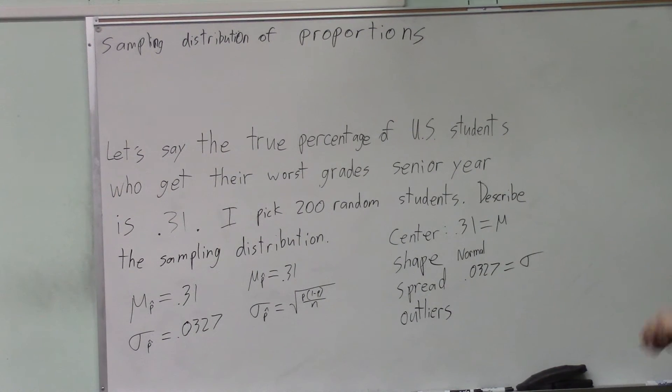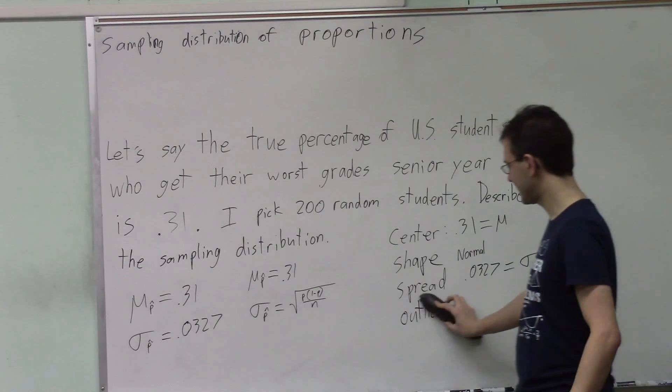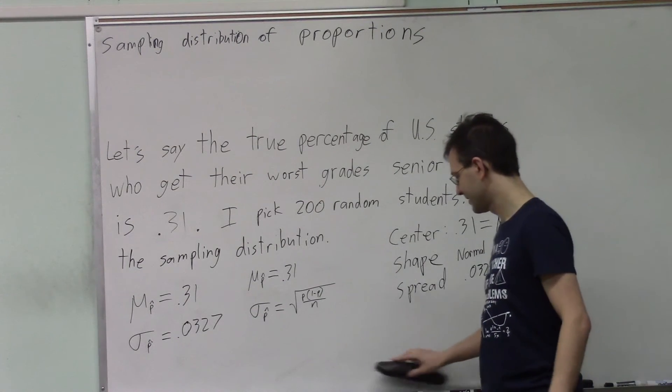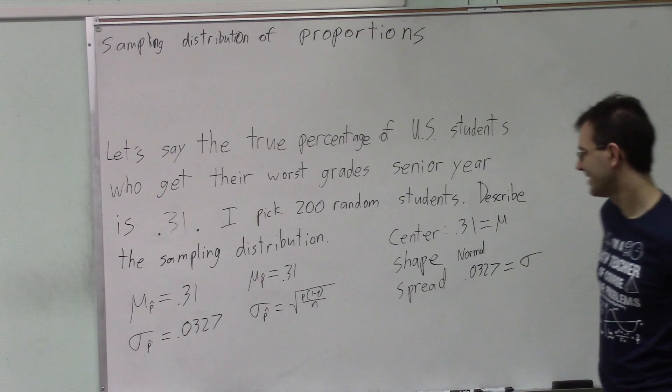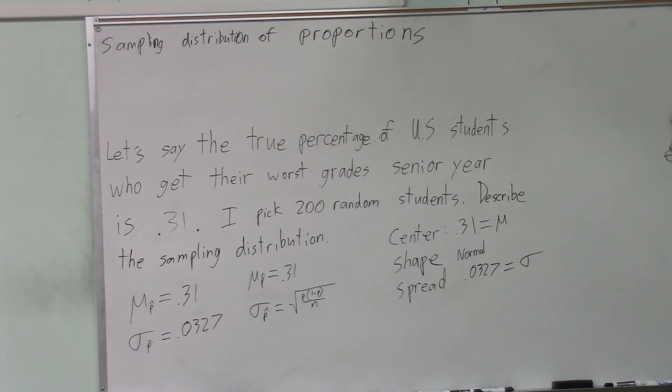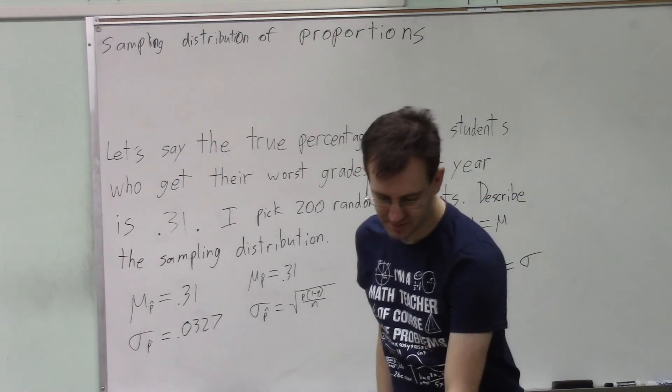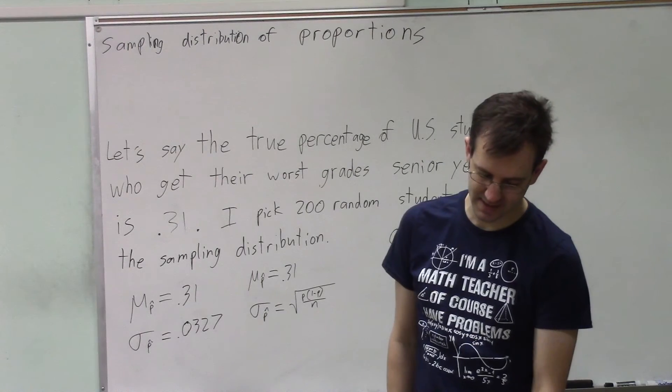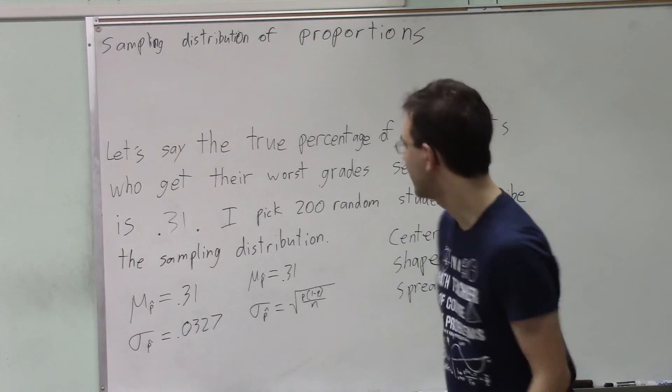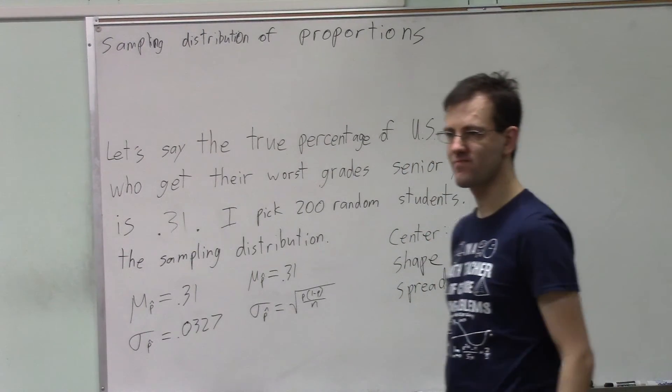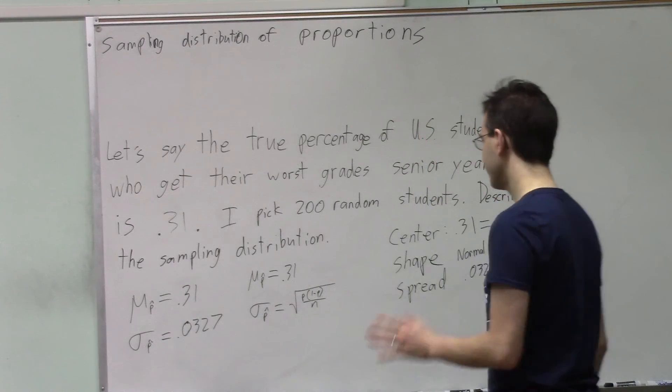They won't ask you about outliers, but basically the sampling distribution will not tend to have outliers. That would be a weird distribution. Enough said. That is the sort of thing you're going to do. You're going to check the conditions to see if it's normally distributed. And if it is, now we can say a lot about this distribution.